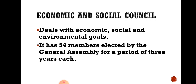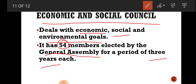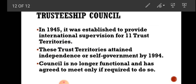The Economic and Social Council is a very important organ of the United Nations and has many different departments that work in different fields — the economic field, the social field, and the environmental field. This organ of the United Nations helps countries maintain their economic, social, and environmental conditions. It has 54 members who are elected by the General Assembly, and each country has a term of three years in the Economic and Social Council.